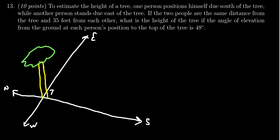And so our people walked some distance from the tree. We don't know what that distance is, but we do know they went the same distance. So the person who went east and the person who went south, they went the same distance away from the tree. We don't actually need to know what that is. But what we do know is that the distance between the two people is 35 feet.